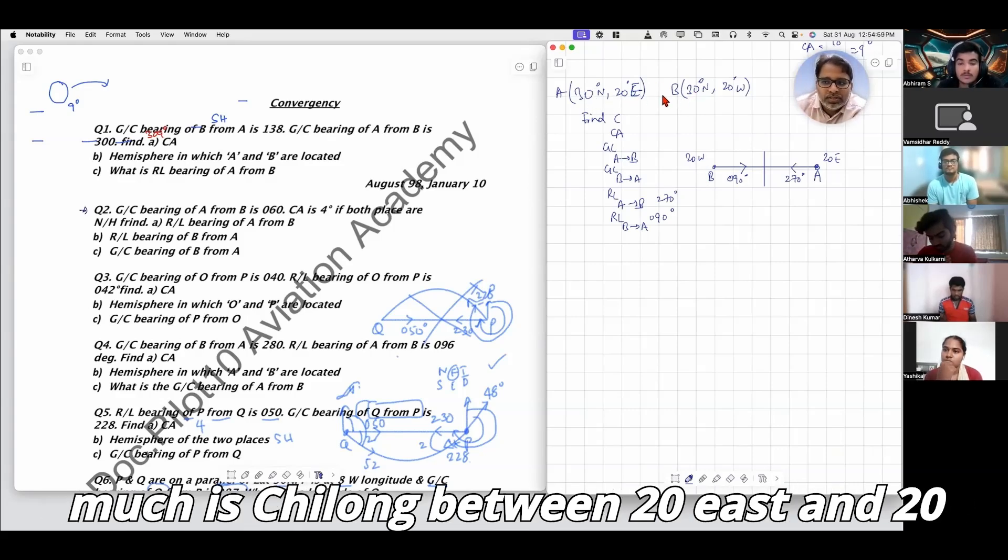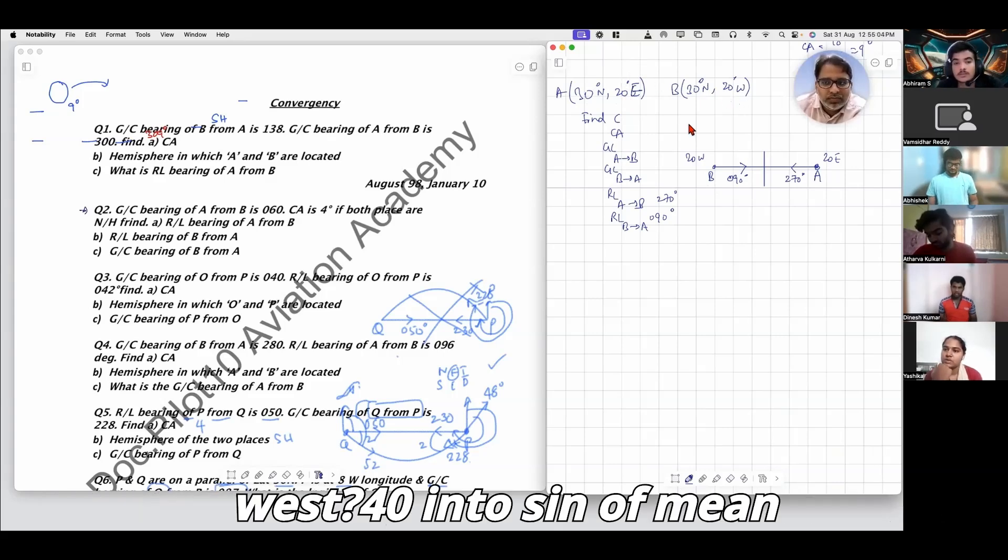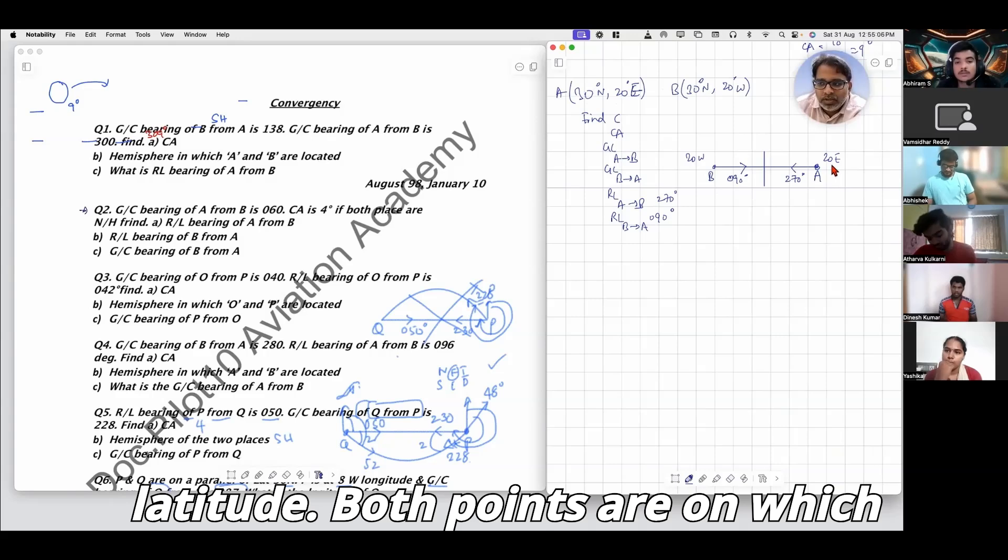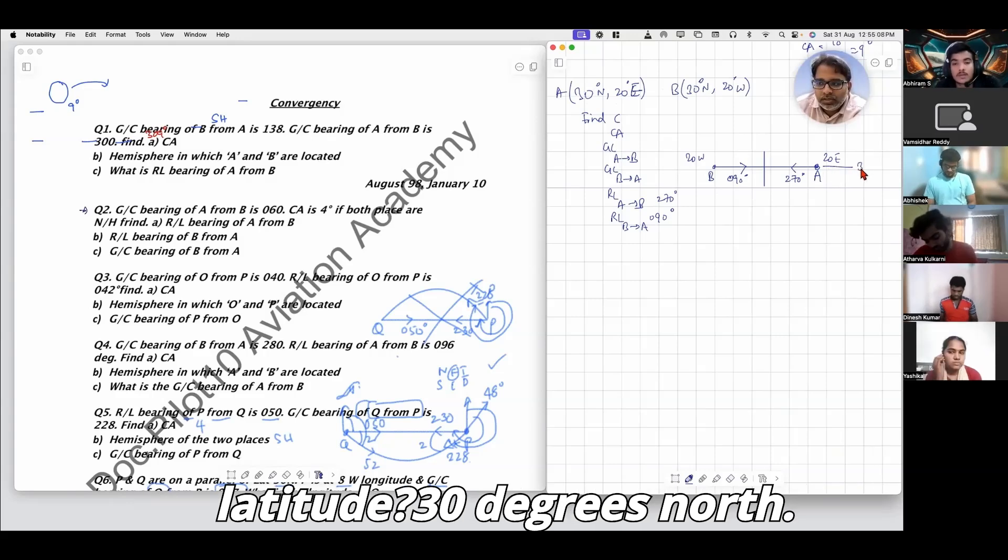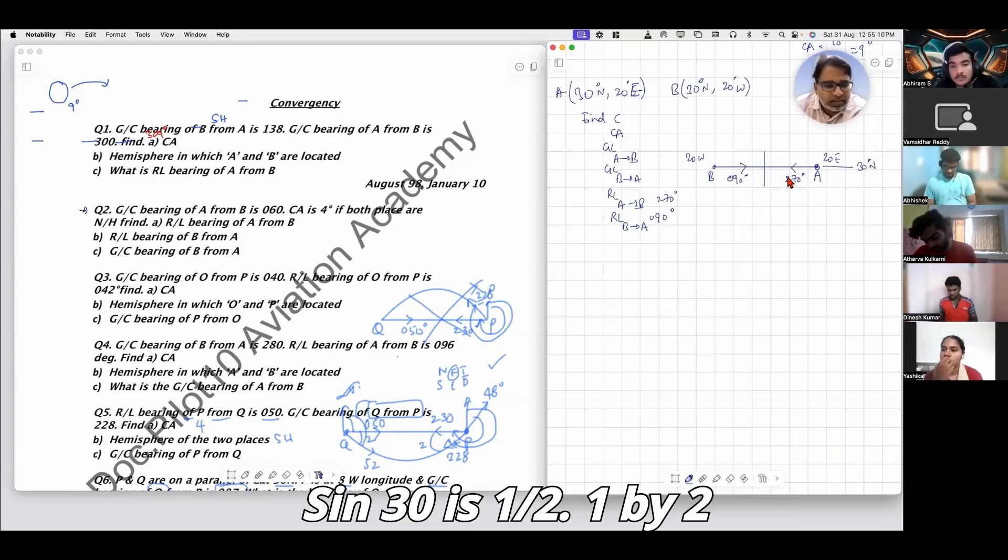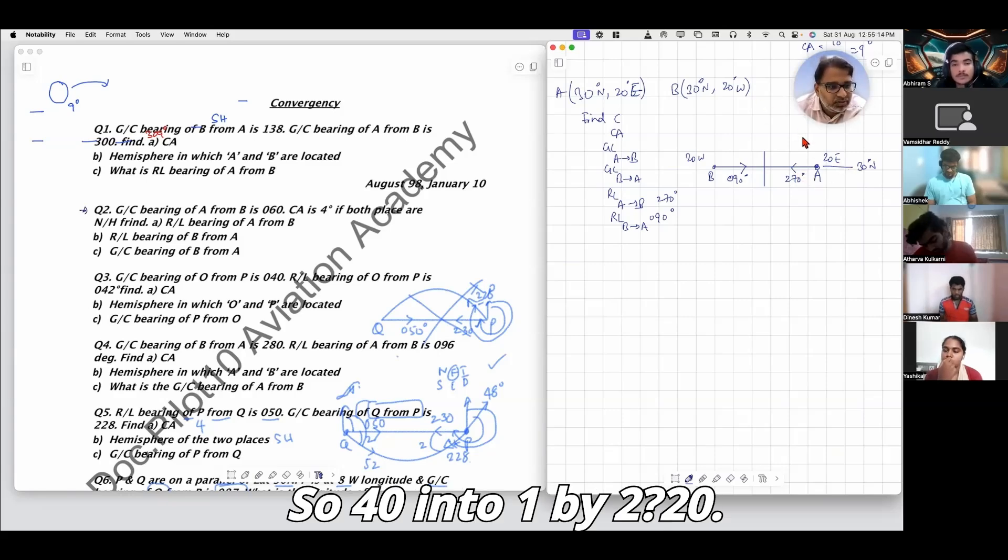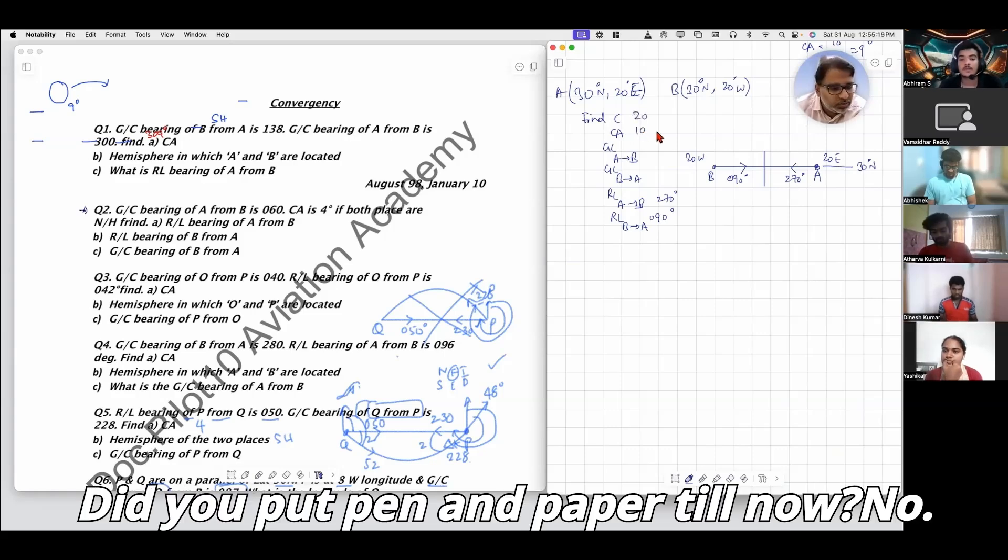Convergency is change in longitude. How much is the change in longitude between 20 east and 20 west? 40 degrees. 40 into sine of mean latitude. Both points are on which latitude? 30 degrees north. Sine 30 is 1/2, so 40 into 1/2 equals 20. The convergency is 20 degrees, conversion angle is 10.